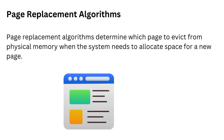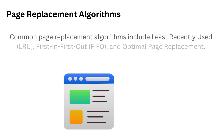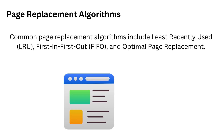Page replacement algorithms determine which page to evict from physical memory when the system needs to allocate space for a new page. Common page replacement algorithms include least recently used (LRU), first-in-first-out (FIFO), and optimal page replacement. These algorithms aim to minimize page faults and optimize memory utilization.